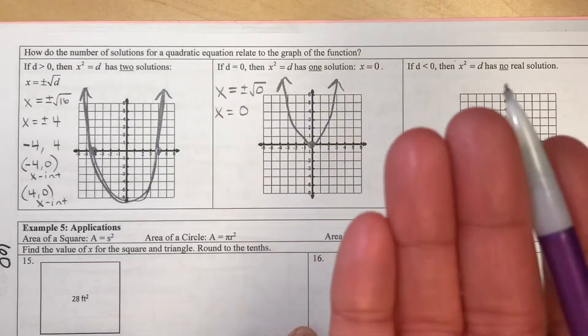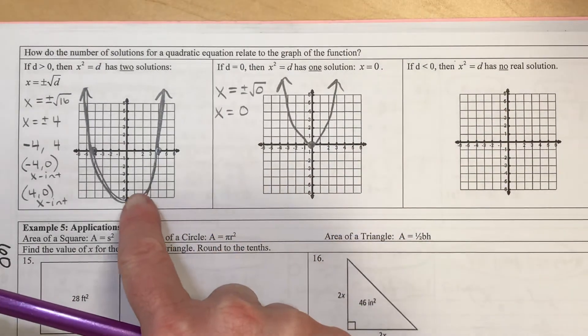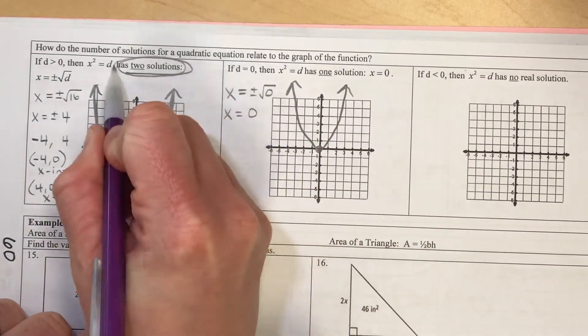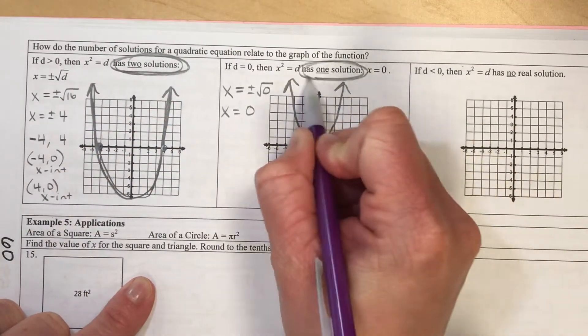So the graph is just kind of bumped up a little bit so that it doesn't touch twice. It actually will only touch one time. And so that's where you see two solutions here versus one solution here.